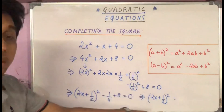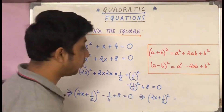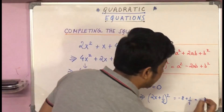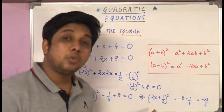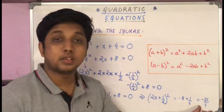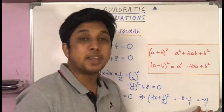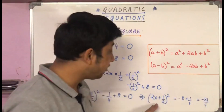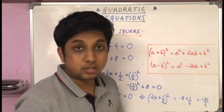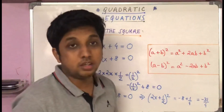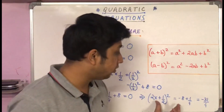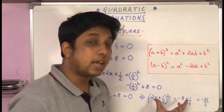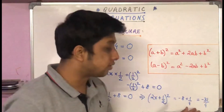So (2x + 1/2)² = -8 + 1/4, which is a negative number. We know that any real number squared is non-negative — both positive and negative numbers give a positive square. Therefore, this equation does not have any real roots. It has complex roots, but as far as real roots are concerned, this equation has no real solutions.